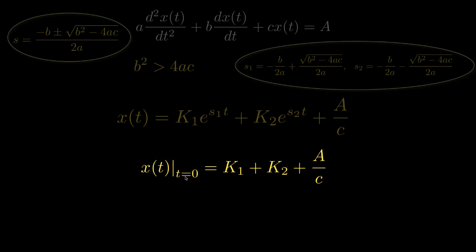We'll need to specify the value for x of t at some particular time. The most common time is t equals 0, for which the function is the sum of k1 plus k2 plus a over c, because the exponential terms e to the s1t and e to the s2t, when t equals 0, will both equal 1. Now a and c are known, but k1 and k2 are not. This means that by specifying the initial condition for x of t, we have one equation but two unknowns, so we'll need another initial condition to determine k1 and k2.